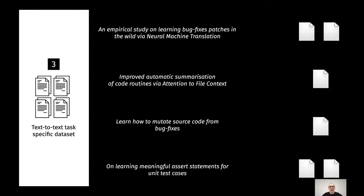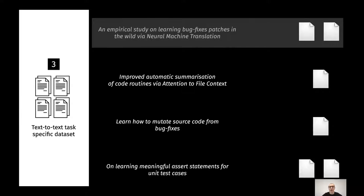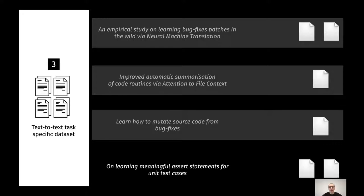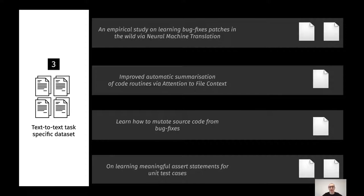The third step is focused on the collection and preparation of the text-to-text task-specific dataset, the fine-tuning part. Starting from the datasets that the authors released in the four papers described at the beginning, for the bug fixing task we collect two datasets, since the authors provided two datasets featuring different levels of complexity. We collect one dataset for code summarization, one for mutant generation, and two datasets for the assert statement generation task — one with raw code and one with an abstracted version of the raw code.